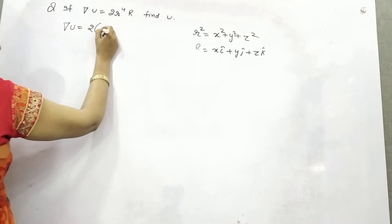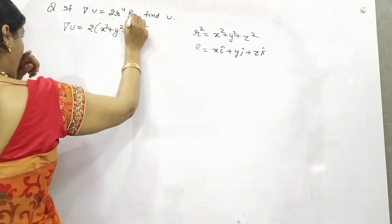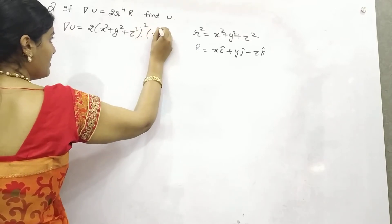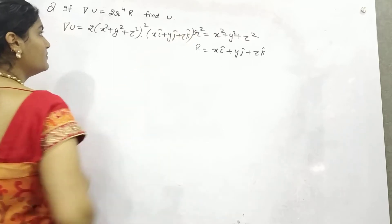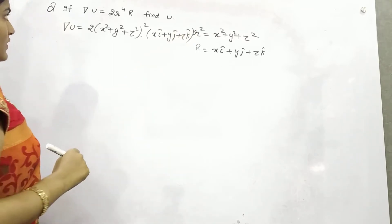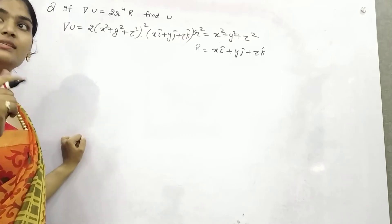And r is x·i + y·j + z·k, right? Thereafter you can see this is your gradient of u, but this is according to what is given to us.